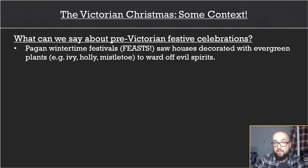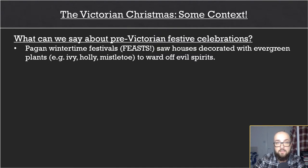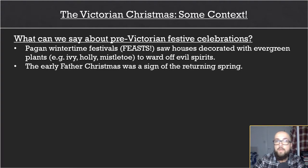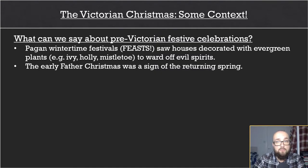Before the Victorians established what we might recognise as Christmas festivities, elements of pagan wintertime festivals still lingered. Winter feasts were commonplace, which might be where the Christmas dinner came from, and it was a common pagan belief that hanging up evergreen plants such as ivy, holly, and mistletoe would ward off evil spirits at wintertime. Furthermore, before he was seen as a figure that brought presents, an earlier version of Father Christmas was seen as a sign of the returning springtime — before he wore red and white, he wore green. Might this explain the Ghost of Christmas Present's appearance?